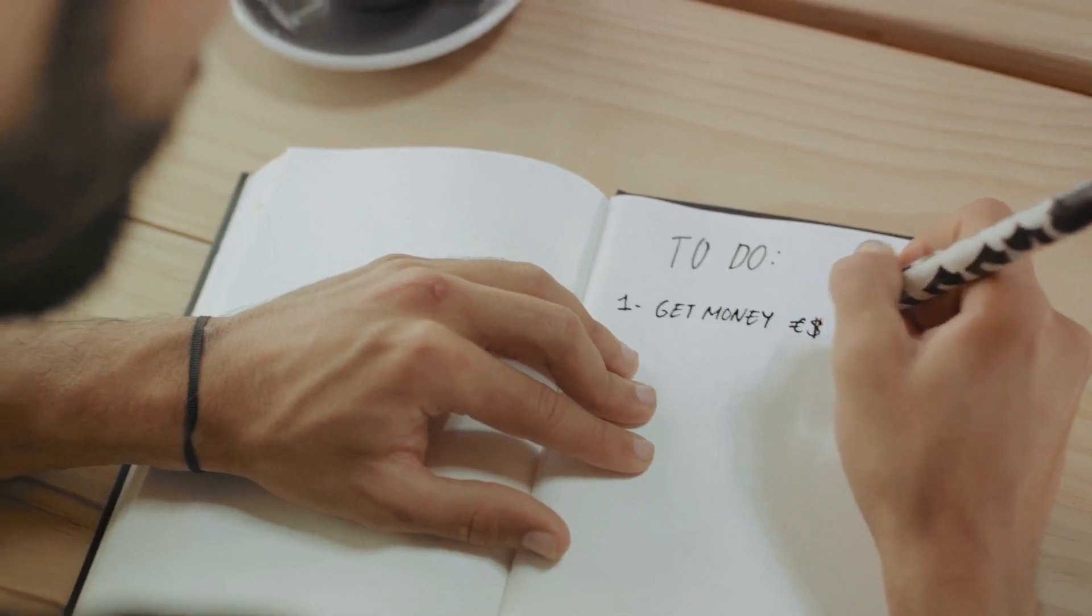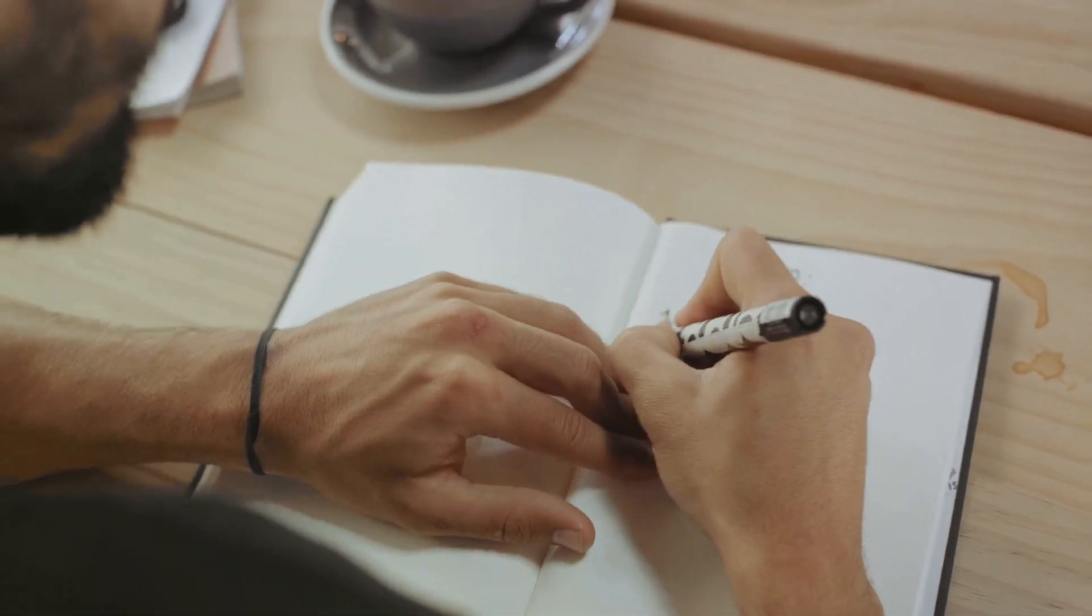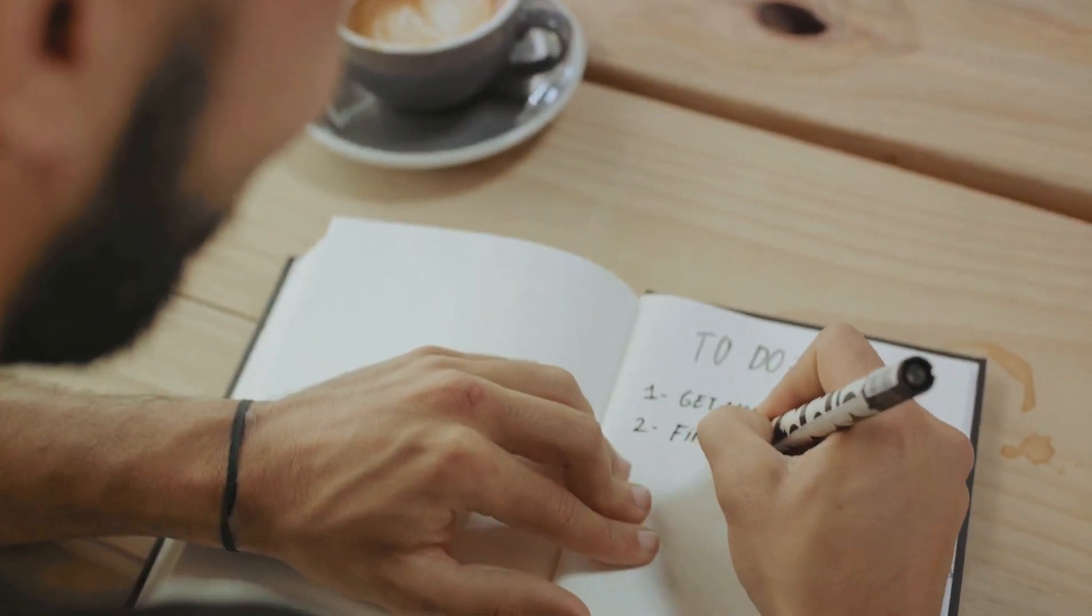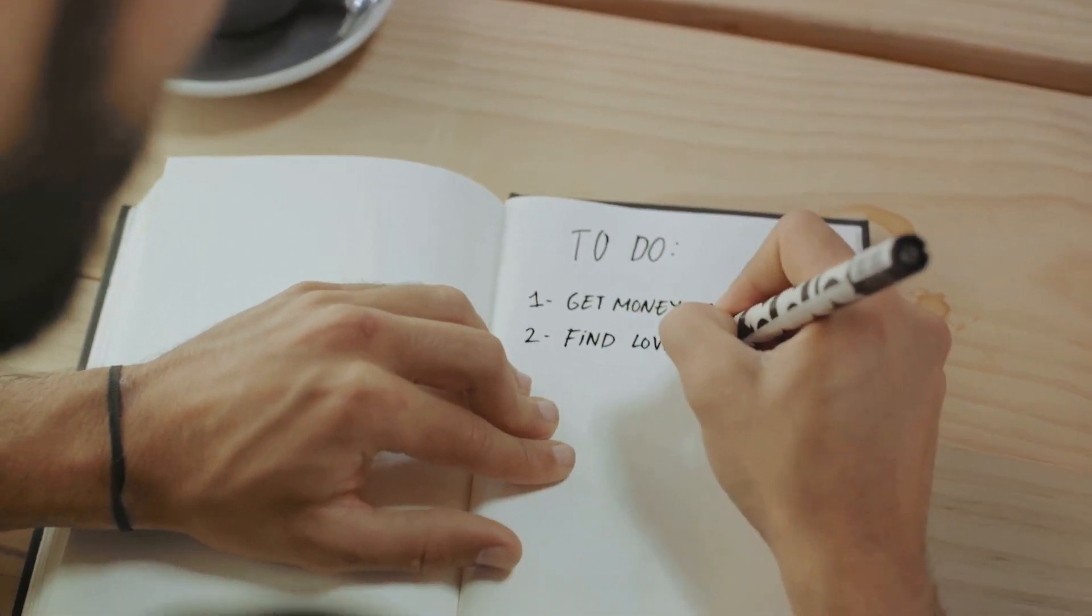Specific, measurable, achievable, relevant, and time-bound. And don't just keep them in your head. Write them down. Seeing them in black and white can make them seem more tangible and achievable. With your goals clearly defined, you are ready for the next step.